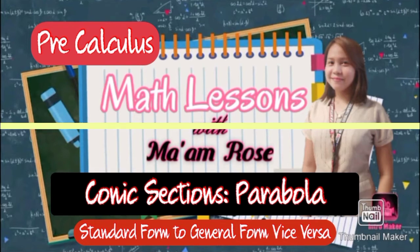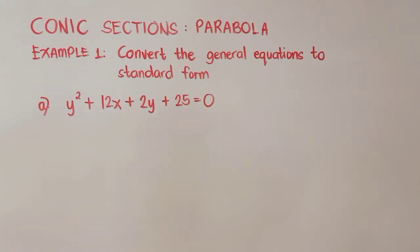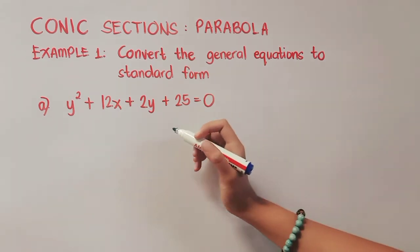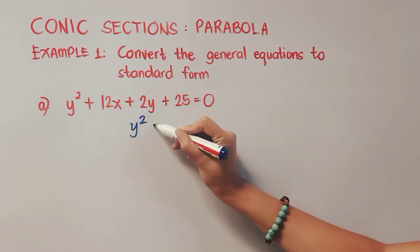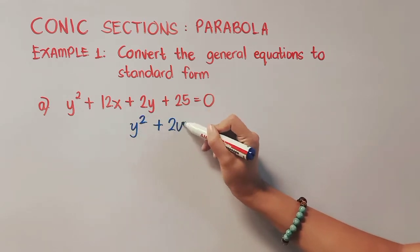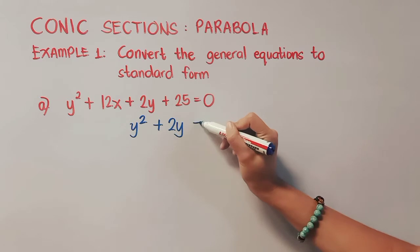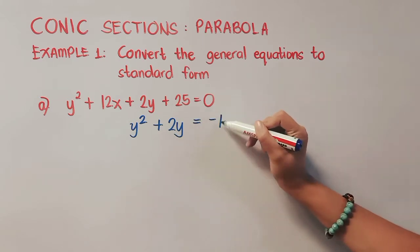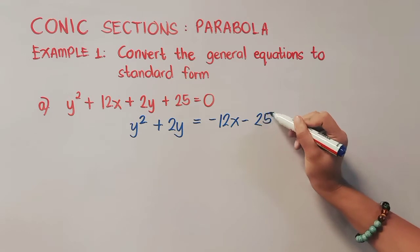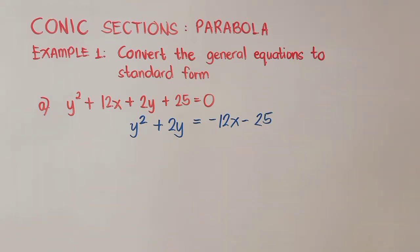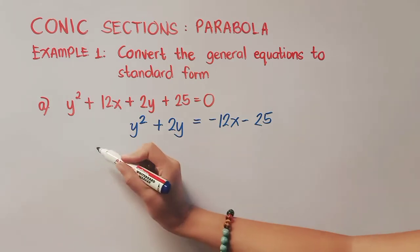General to Standard Form. The first thing you have to notice is the variable with the exponent 2. In this one, we have y. Therefore, place all the terms with the variable y on the left side. So we have y squared plus 2y, and then transpose the rest to the right side. Remember that in transposing terms, you have to change the sign.